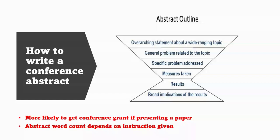Now, how to write a conference abstract. To be an active participant at a conference and to get funded, you usually need to present a paper, which means submitting an abstract and having it accepted. This significantly increases your chances of getting funding compared to just being an audience member. Abstracts have different word counts — one conference might ask for 300 words, another 500, another 250. Always read the specific instructions. Usually it's short — about half a page to one full page. Start with a broad introduction of the topic.